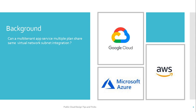The background question is: can a multi-tenant app service with multiple plans share the same virtual network subnet integration? First, let's understand what a multi-tenant app service is. A multi-tenant app service means the app service plan shares the same hardware used by another organization or tenant, whereas a single-tenant app service uses reserved hardware where no other app services can be hosted.